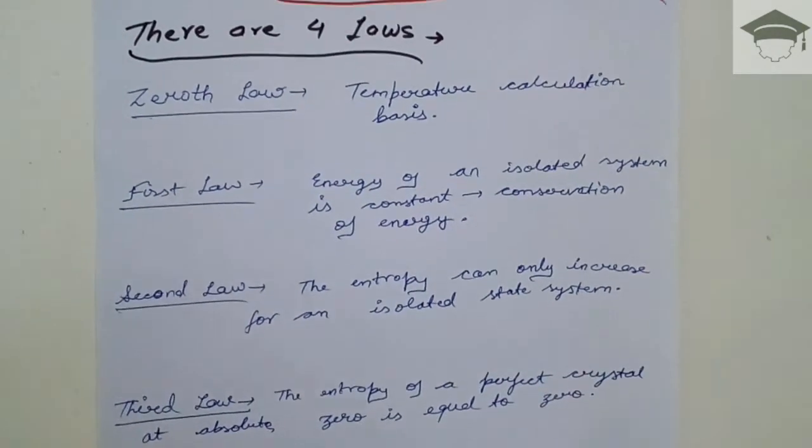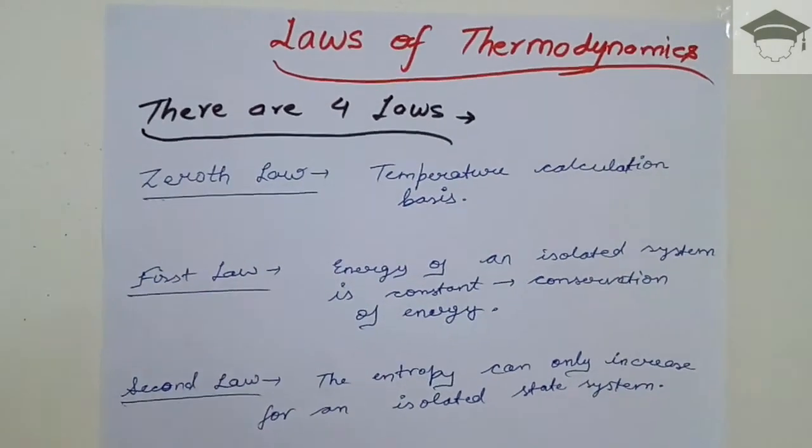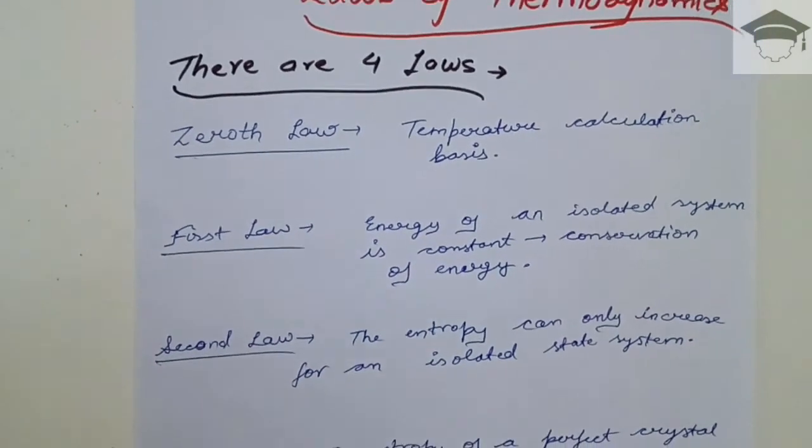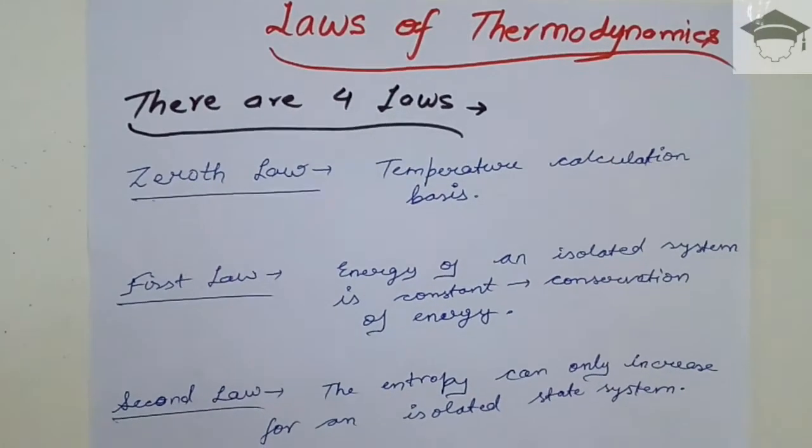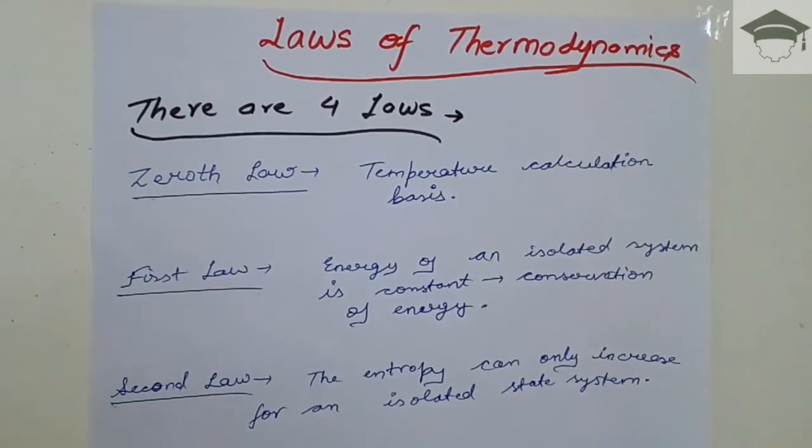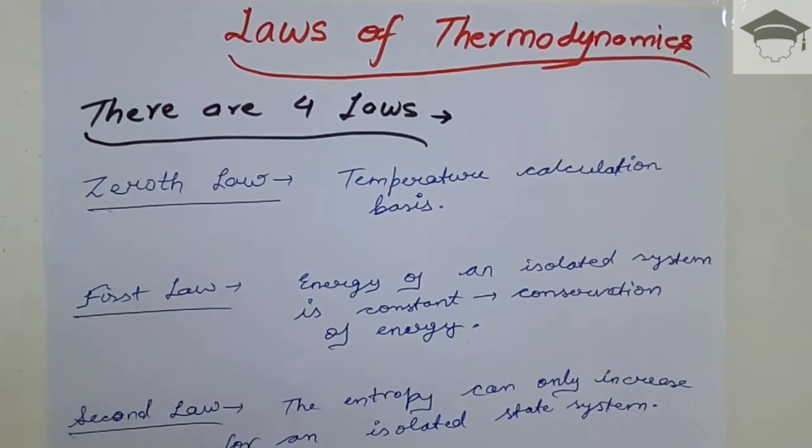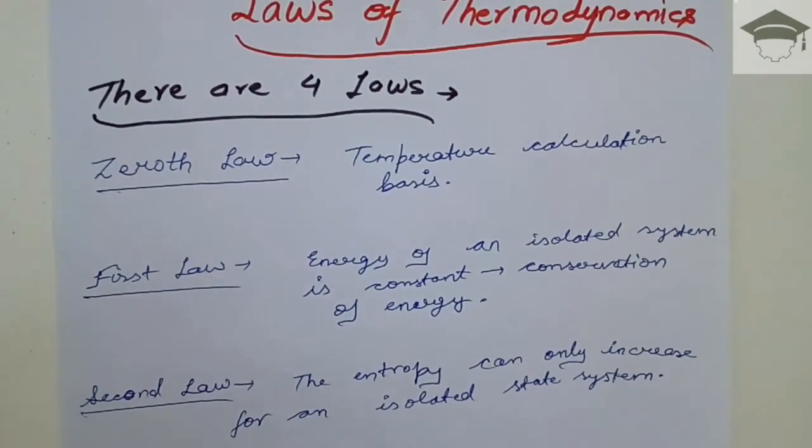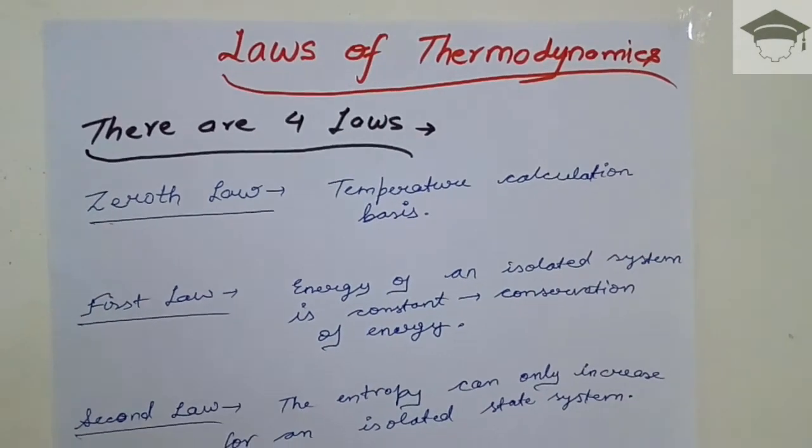Now the zeroth law states that if a body A is in thermal equilibrium with body B, and body B is in thermal equilibrium with body C, then all three bodies A, B, and C are together in thermal equilibrium. This law is important because it forms the basis for temperature calculation.